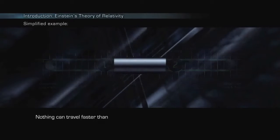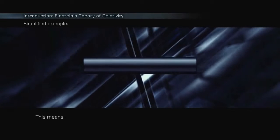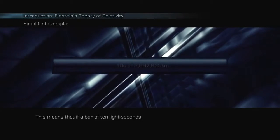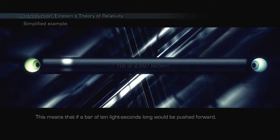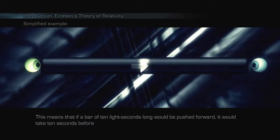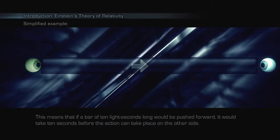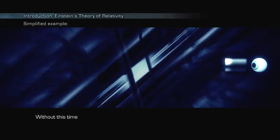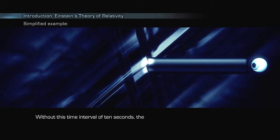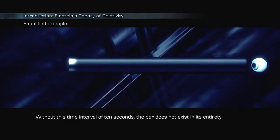Nothing can travel faster than the speed of light. This means that if a bar of 10 light seconds long would be pushed forward, it would take 10 seconds before the action can take place on the other side. Without this time interval of 10 seconds, the bar does not exist in its entirety.